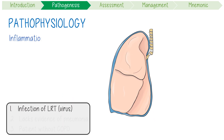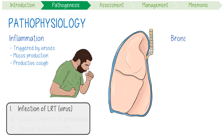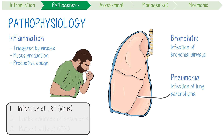Pathophysiologically, acute inflammation of the bronchial walls is triggered by a variety of viruses, which causes increased mucus production and edema. This leads to the hallmark productive cough seen in this condition. Bronchitis specifically refers to infections in the bronchial airways, whereas pneumonia denotes infection in the lung parenchyma, resulting in consolidation of the affected lobes. Remember, parenchyma refers to the functional tissue of an organ, like the alveoli — in contrast to something like the airways or the pleural linings.